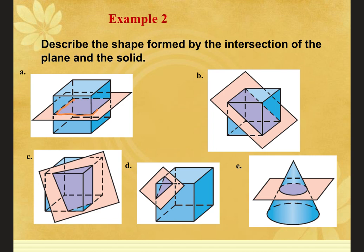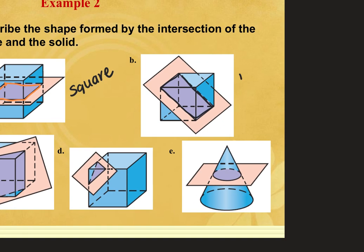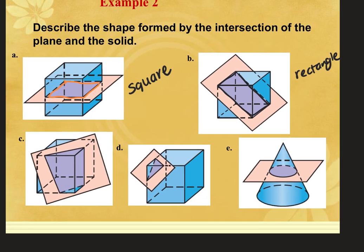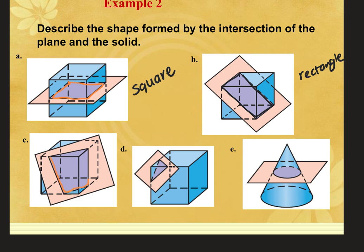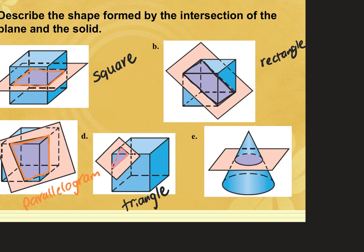Example 2 asks to describe the shape formed by the intersection of the plane and the solid — the cross section. A appears to be a square (or quadrilateral). B appears to be a rectangle (also a quadrilateral). C is a parallelogram (also a quadrilateral). D is a triangle. And E is a circle.